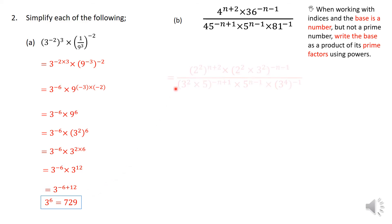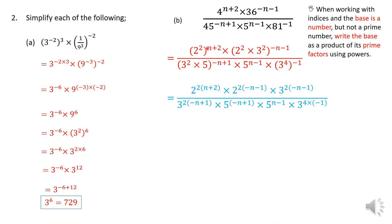So this one here again, 2 squared is 4, 36 is 2 squared times 3 squared, and 45 is 3 squared times 5, and 81 is 3 raised to the power of 4. So I'm going to then multiply out where I can. And this power of minus n minus 1 is for this 2, as well as that 3 there. So that's what I did there. Same applies with that minus n plus 1 is for the 3 squared, as well as for the 5.